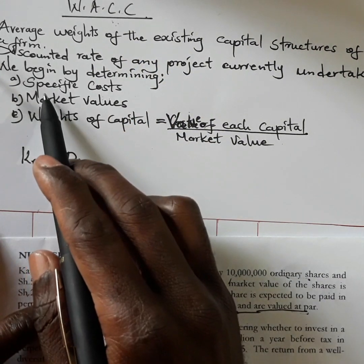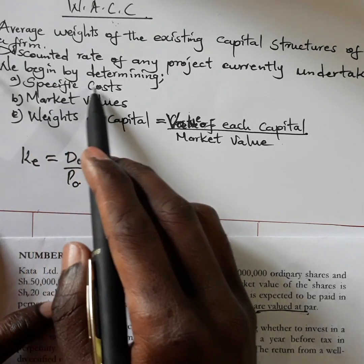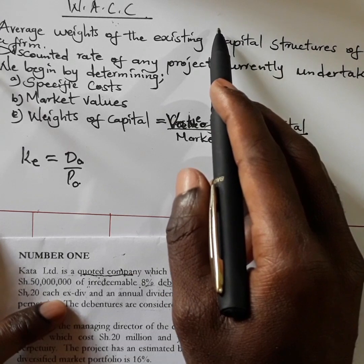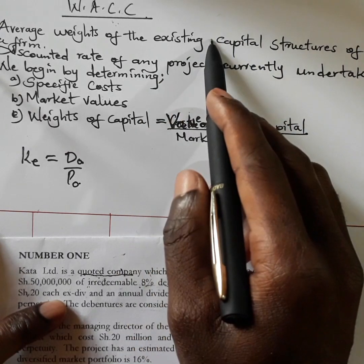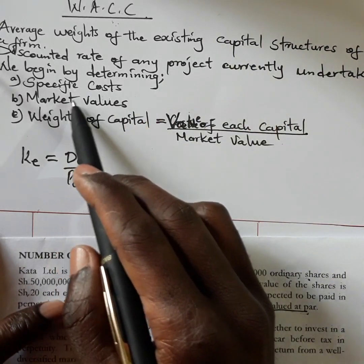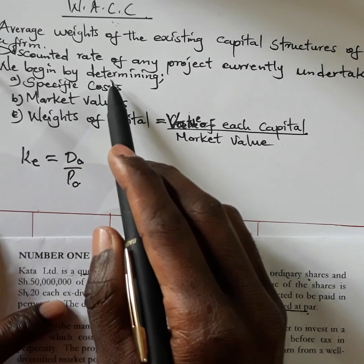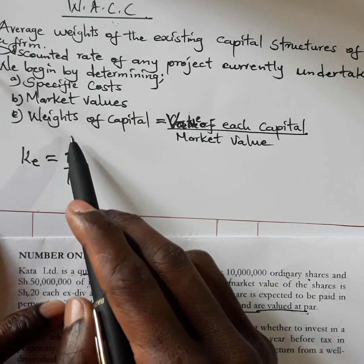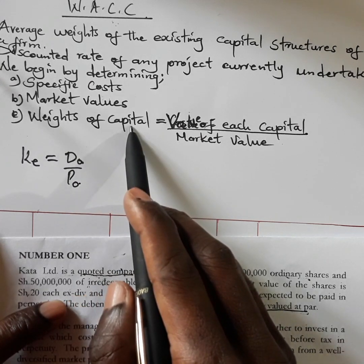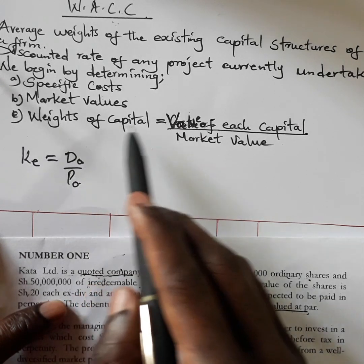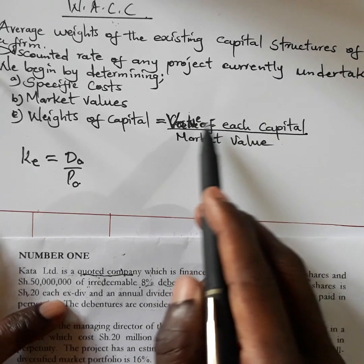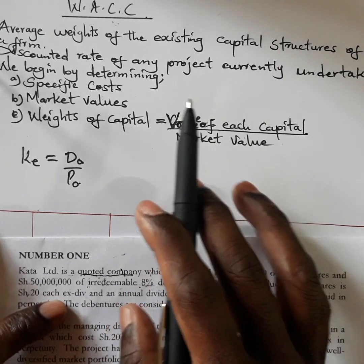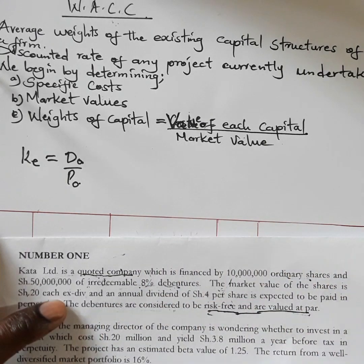To determine the WACC, we follow this procedure: first, determine the specific costs — that is, the cost of each capital. Second, determine the market values of those specific costs. Third, get the weights of the capital. The weights are calculated as the value of each capital divided by the total market value, giving us a ratio.